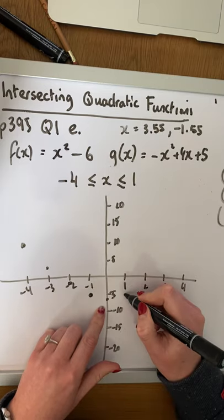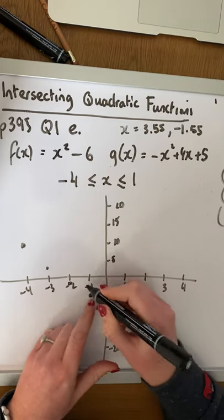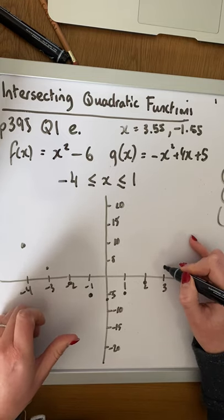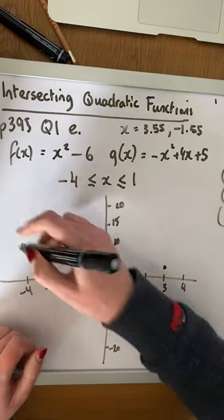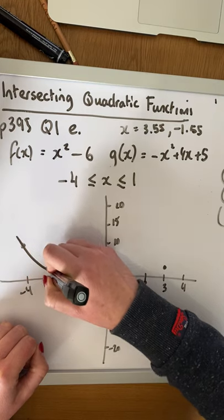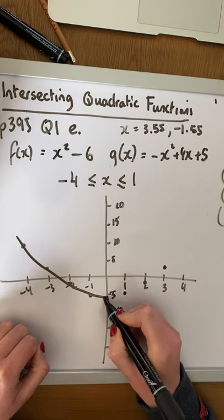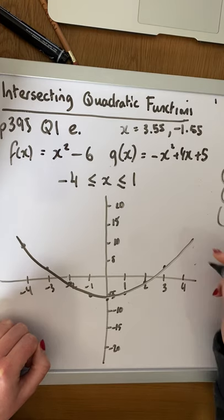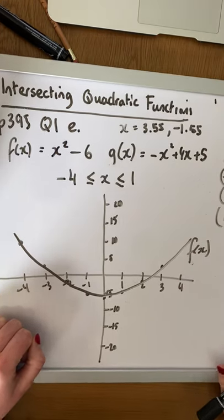1, minus 5. And that will be a symmetrical graph. So the next one will be 2, minus 2, 3, 3, there. And that will be the shape of that quadratic graph there. Alright. So that is f of x. So that's f of x there. Alright.